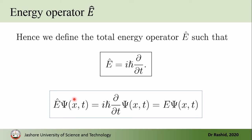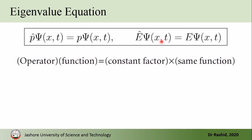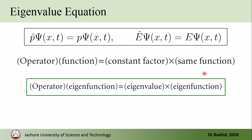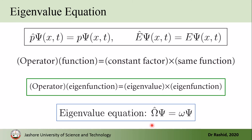That is, when the energy operator acts on the wave function it gives us the energy. Now looking at these two equations, we see that when an operator acts on the wave function it gives a constant factor multiplied by the same function. We call this an eigenvalue equation: the operator acting on the eigenfunction gives the eigenvalue multiplied by the eigenfunction. In symbol, Ω̂·ψ = ω·ψ, where Ω̂ is the operator and ω is the eigenvalue.